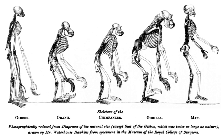Ediacara biota appeared during the Ediacaran period, while vertebrates, along with most other modern phyla, originated about 525 Ma during the Cambrian explosion. During the Permian period, synapsids, including the ancestors of mammals, dominated the land, but most of this group became extinct in the Permian-Triassic extinction event 252 Ma. During recovery, archosaurs became the most abundant land vertebrates, and the dinosaurs dominated the Jurassic and Cretaceous periods. After the Cretaceous-Paleogene extinction event 66 Ma, mammals increased rapidly in size and diversity. Such mass extinctions may have accelerated evolution by providing opportunities for new groups to diversify.